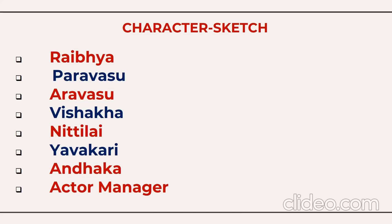So that's the brief summary of the play. The whole play is based on themes of revenge, hatred, sacrifice, lust, and love. The important characters are Rabia, Parvasu, Arvasu, Vishakha, Nithilai, Yavakari, Andhaka, and the actor-manager. In the examination, one question will definitely be about character sketches, so you should know all of these characters well. You can also watch the detailed videos on The Fire and the Rain — the links are in the description box.